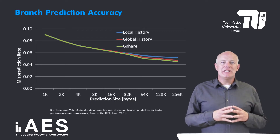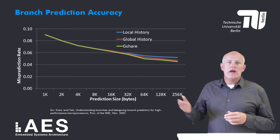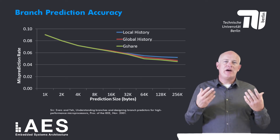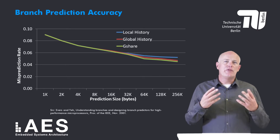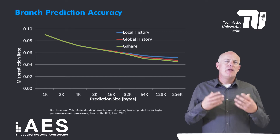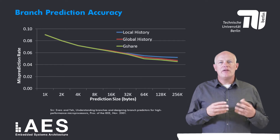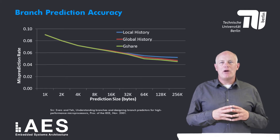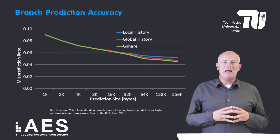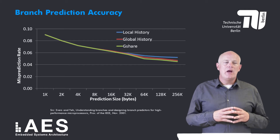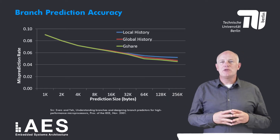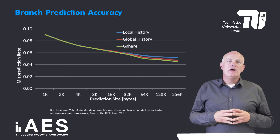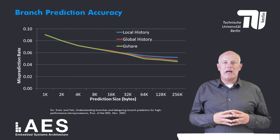I start with some branch prediction accuracy results. This figure shows the misprediction rate — the number of mispredicted branches divided by the total number of branches executed — for three different branch predictors. These results are taken from a paper by Avers and Yeh called 'Understanding Branches and Designing Branch Predictors for High-Performance Microprocessors,' published in the proceedings of the IEEE in November 2001. The horizontal axis shows the prediction table size in bytes, the vertical axis shows the misprediction rate, averaged over several SPEC benchmarks.